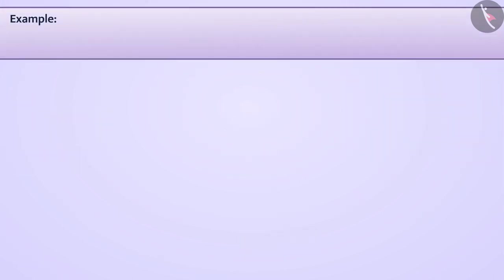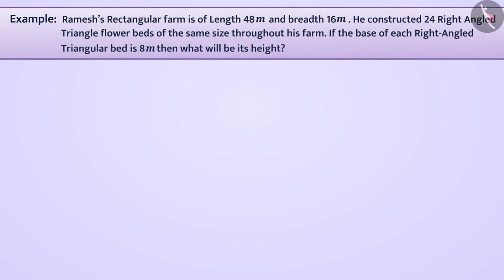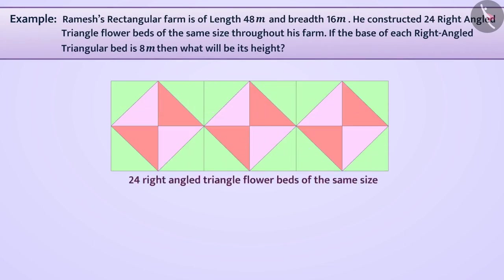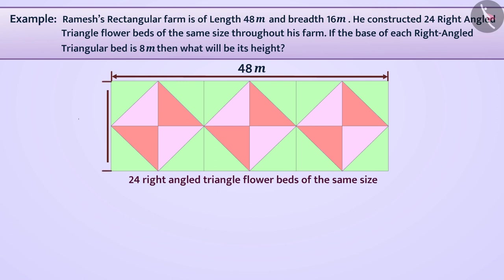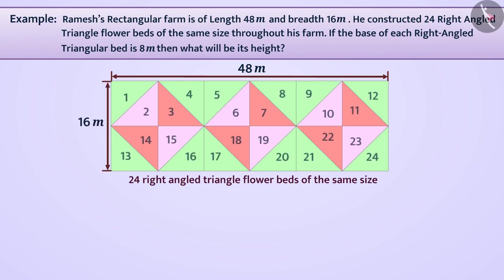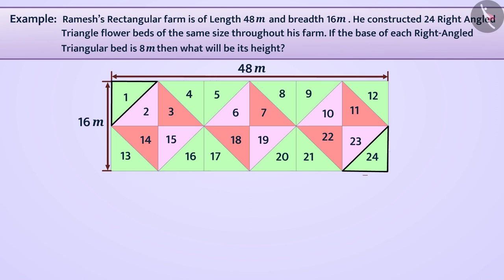Next example: Ramesh's rectangular farm is of length 48 meter and breadth 16 meter. He constructed 24 right angle triangular flower beds of the same size throughout his farm. If the base of each right angle triangular bed is 8 meter, then what will be its height?